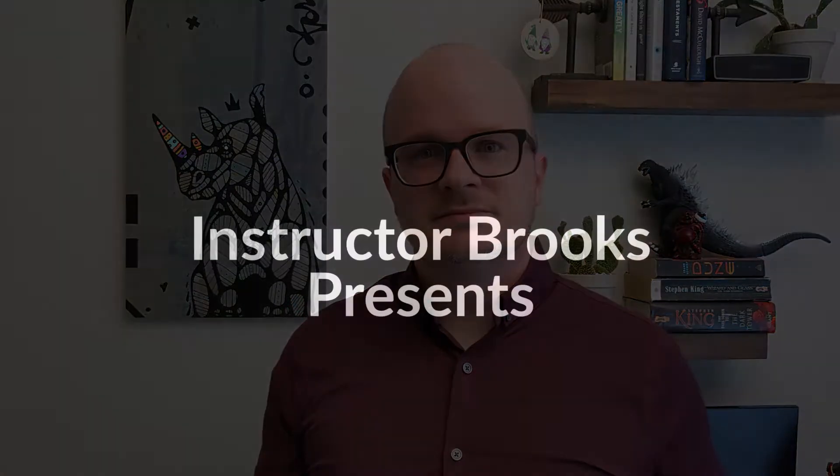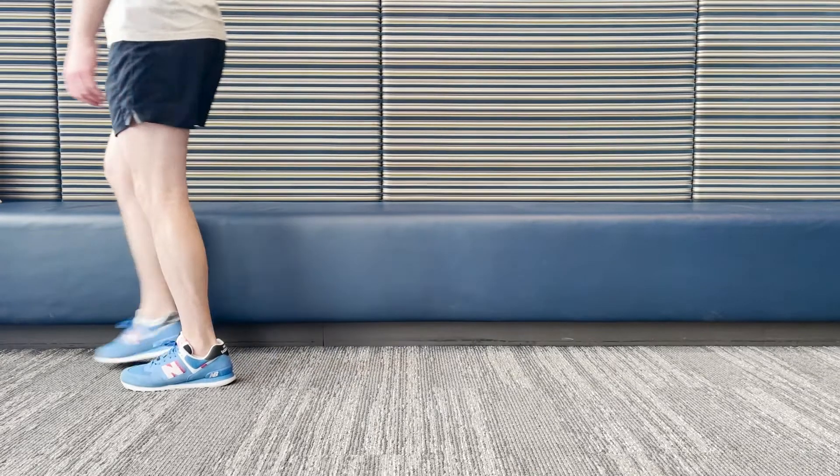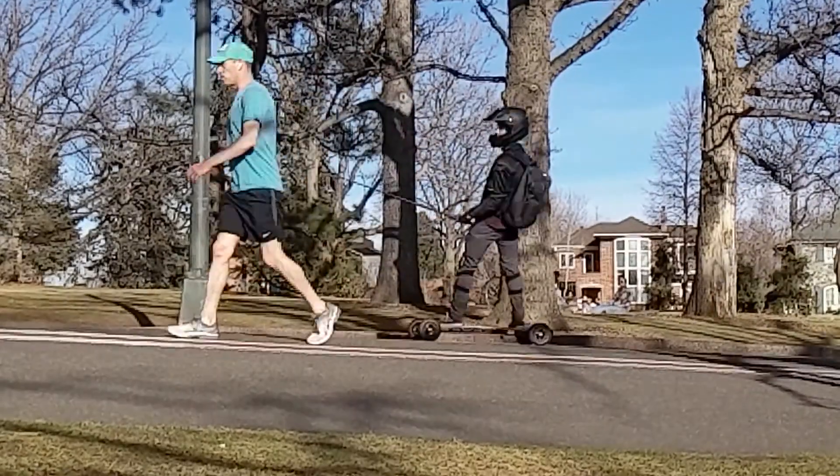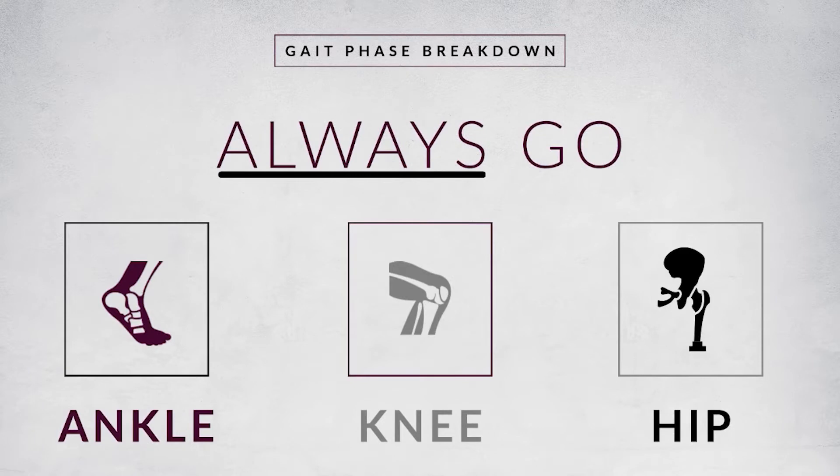So if you're ready to learn something, let's go! For every phase of the gait cycle, you should consider three joints: ankle, knee, and hip. That doesn't mean that there's a muscle contraction occurring at every joint, but it's a great way to make sure you don't forget one.